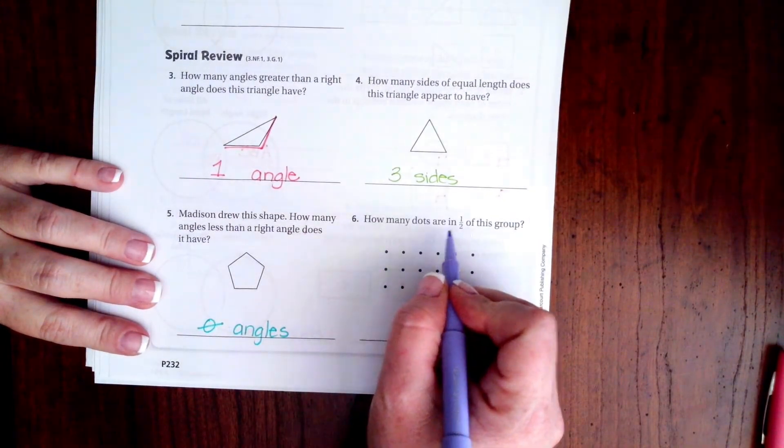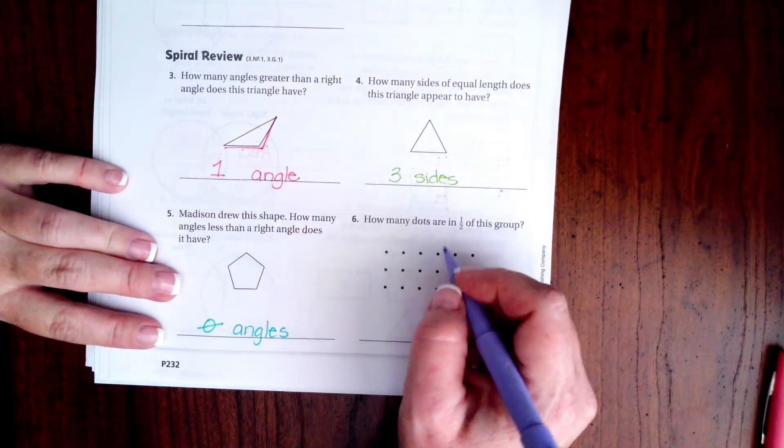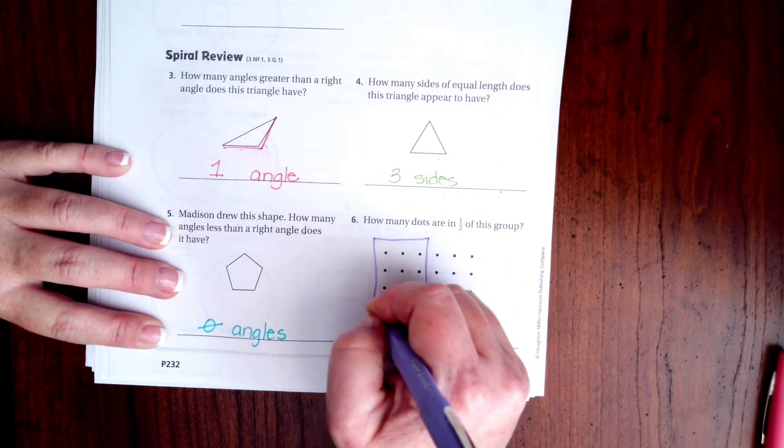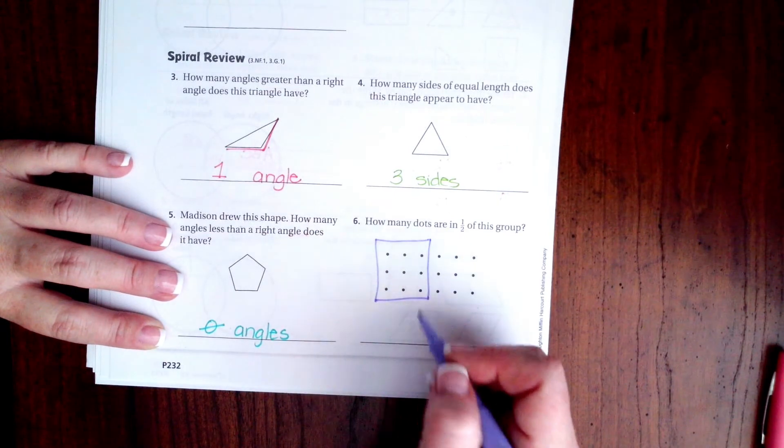How many dots are in half of this group? I have one, two, three, four, five, six, which means half of six is three. I circled three, or three columns of them.